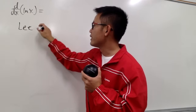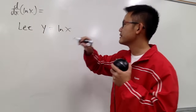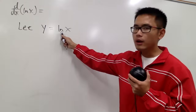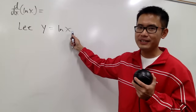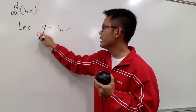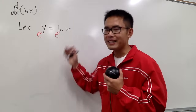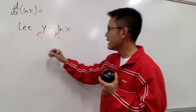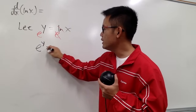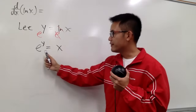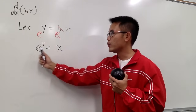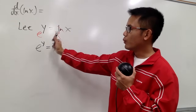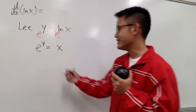Let y = ln x. Since ln x is the inverse of e^x, we raise e to both sides: e and ln cancel on the right, giving us e^y = x. The advantage of this equation is that we have e to a power, which we already know how to differentiate, even though y is not isolated — we use implicit differentiation.